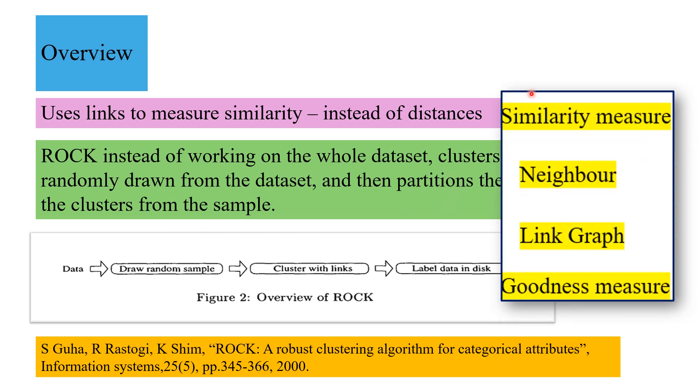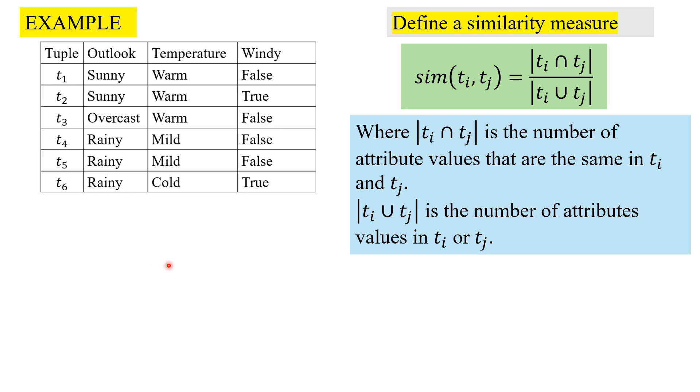We first begin by going through the important concepts: the similarity measure, neighbor, link graph, and goodness measure. For the similarity measure, we're taking an example of six tuples of categorical data. This similarity measure is the Jaccard coefficient between tuples ti, tj: ti intersection tj by ti union tj. These concepts we have discussed earlier in different videos.